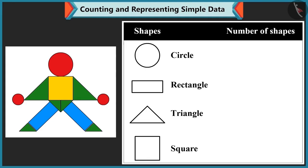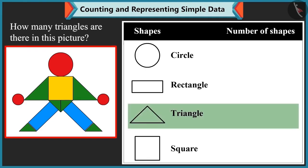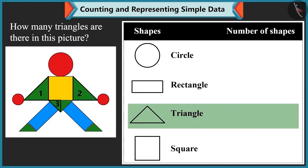Well done. Now tell me how many triangles are there in this picture? There are one, two, three, four, five and six. There are six triangles.